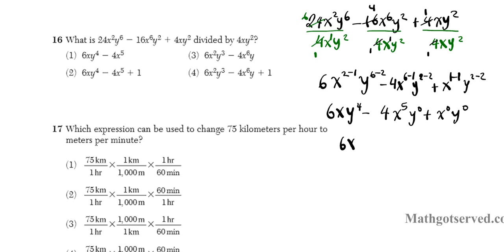So this is going to be 6xy⁴ minus 4x⁵. Now any number raised to the 0 power is just 1. So this whole thing is just 1. But that goes away. Plus x⁰, y⁰ is just 1 times 1 which is just 1. And there goes your final answer. And that is option number 2.